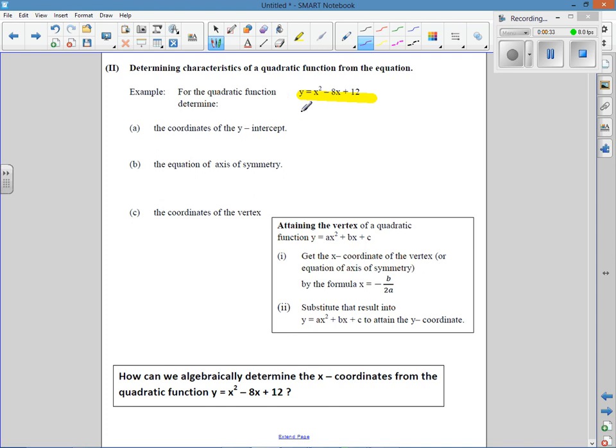So coordinates of the y-intercept. Remember the general form is y equals ax squared plus bx plus c. This last value here, or it doesn't have to be last, it could be given in any order. But the value without an x is always the y-intercept. It's right here. So that will be coordinates y equals 12, or at the point (0, 12).